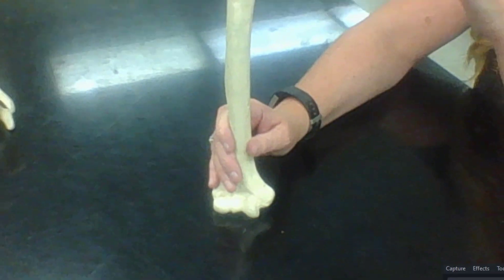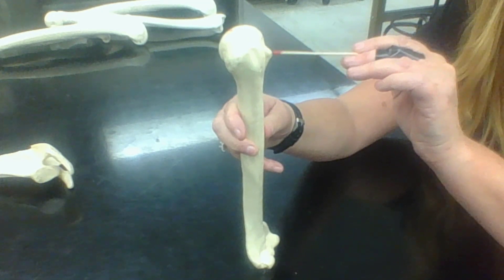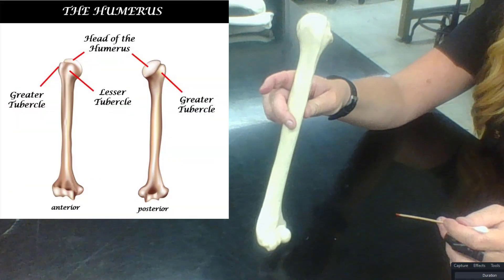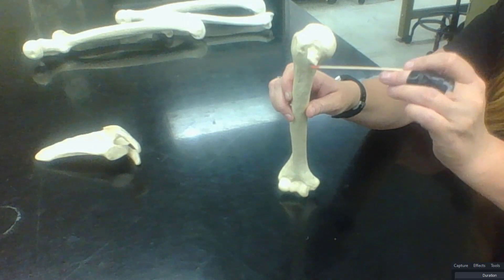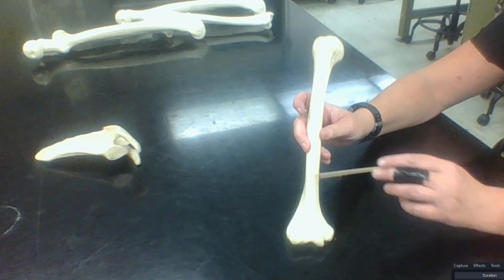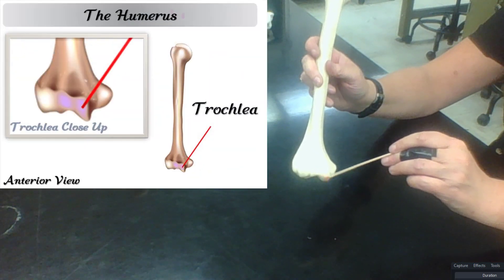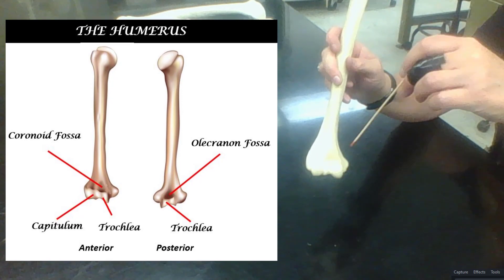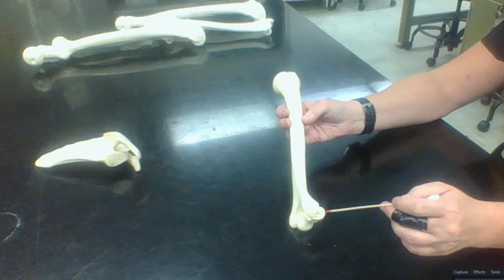At the proximal end of the humerus, the lesser tubercle is the more pronounced bump and the greater tubercle is less pronounced. Moving to the distal end, the anterior aspect shows the coronoid fossa and the trochlea, which looks like a spool of thread. The round portion visible only from the anterior aspect is the capitulum — 'capitulum' actually translates as 'bald head.'